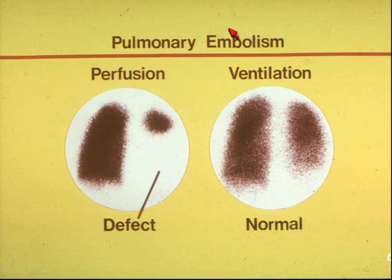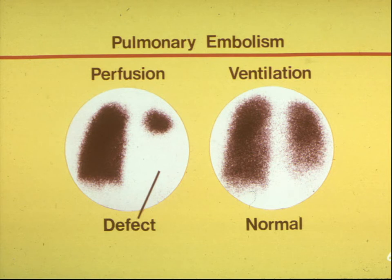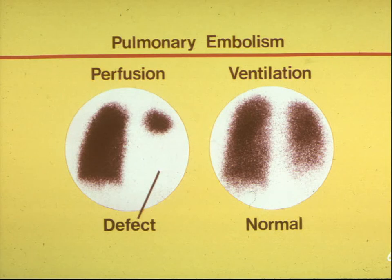This is a lung scan looking at blood flow to the lungs — something we inject intravenously — and particles we have the patient breathe in. If you have a clot in the lung, the airways usually remain open. If a patient has emphysema or chronic lung disease, the perfusion scan and the ventilation scan will look identical. But if we have a big defect on the perfusion scan with a normal ventilation scan, that's what makes the diagnosis of pulmonary embolism — a clot in the lung.